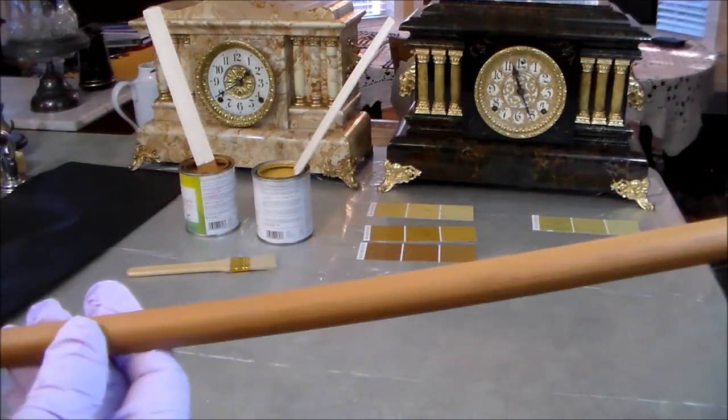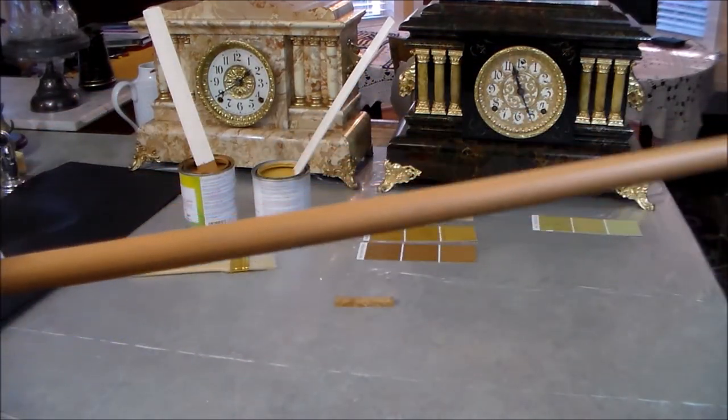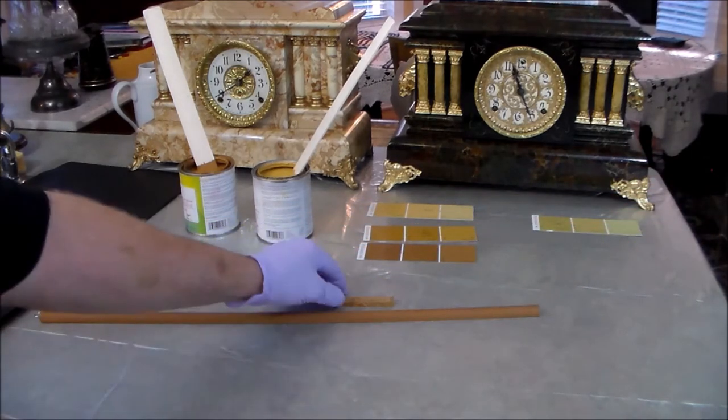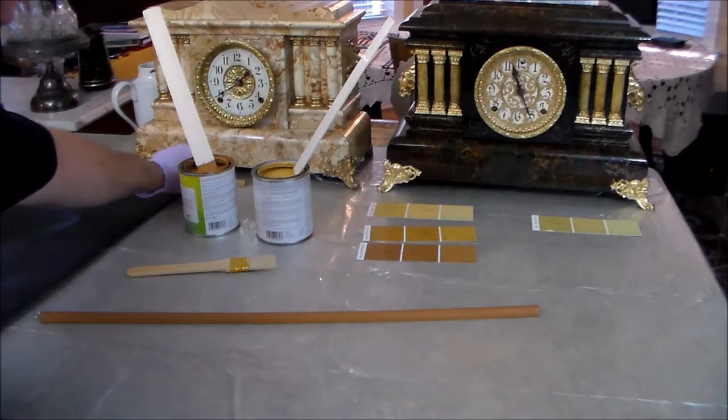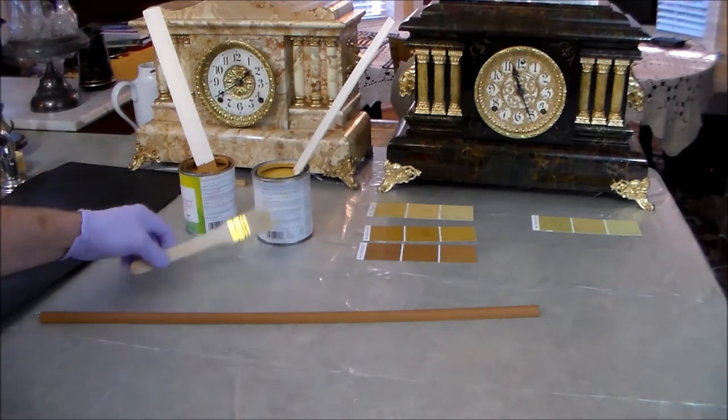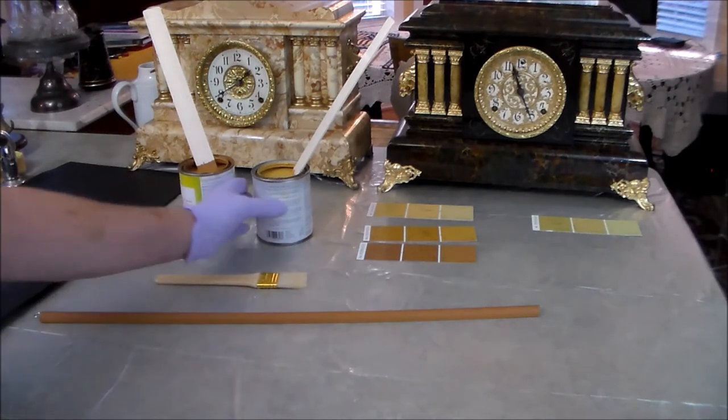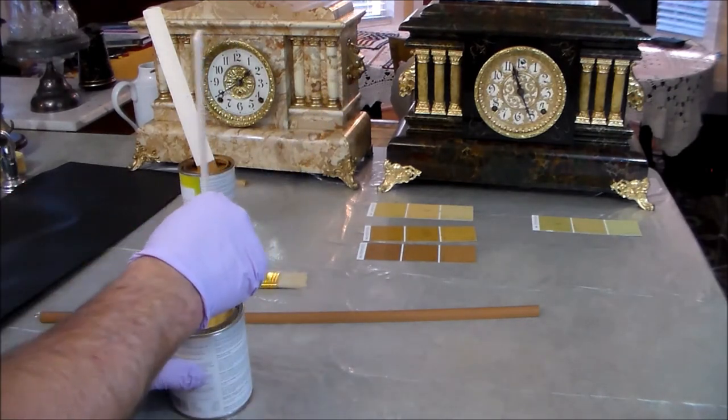Now, we can see that our column has dried nicely and is looking pretty good, nice and smooth. And it's got a fairly good match there. Now, what we're going to do is we're going to go and put the next coat on, which is the marbleizing coat.